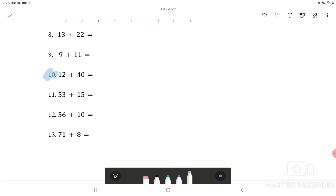Looking at number 10 we have 12 plus 40. Let's write that in vertical form so it's easier for us to solve. 12 plus 40. Let's add from the ones place first. 2 plus 0 is 2 and 4 plus 1 is 5. So the answer for number 10 will be 52.